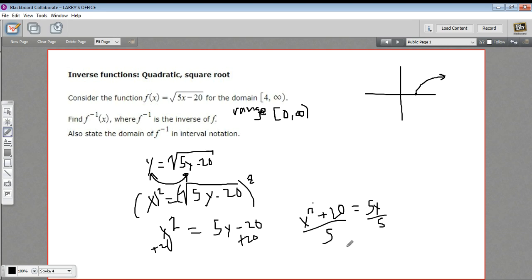And I'm going to rewrite this the other direction. I'm going to get y equals x squared over 5 plus 4. So this is my inverse function. So I can say f inverse of x equals x squared over 5 plus 4. So that's the first part of my answer.